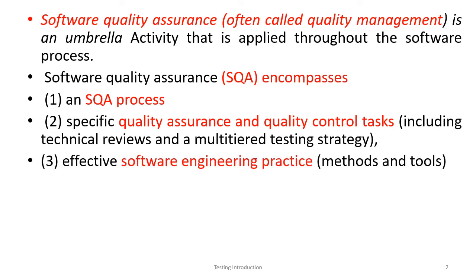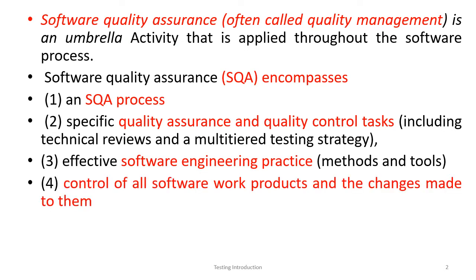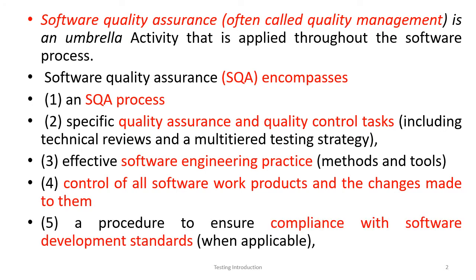Effective software engineering practices and other software engineering practices — methods and tools — are part of software quality assurance. SQA also involves control of all software work products and changes made to them, as well as a procedure to ensure compliance with software development standards.